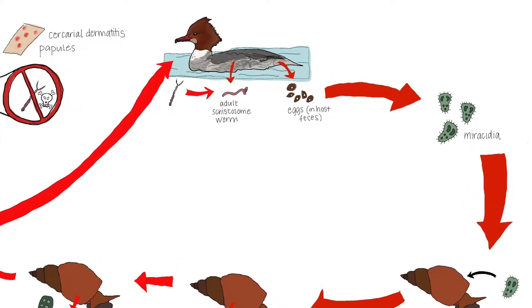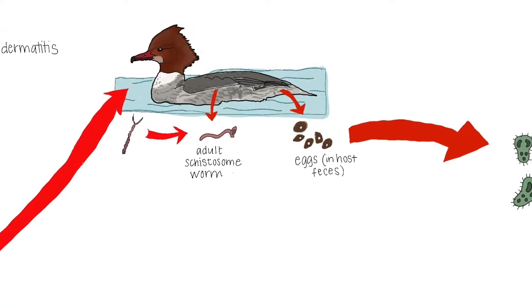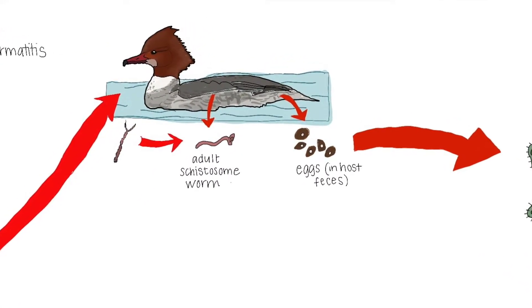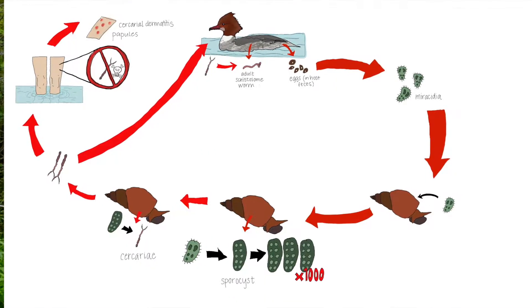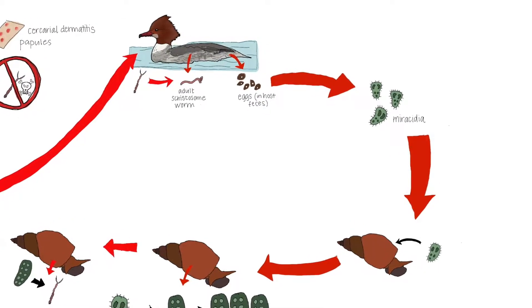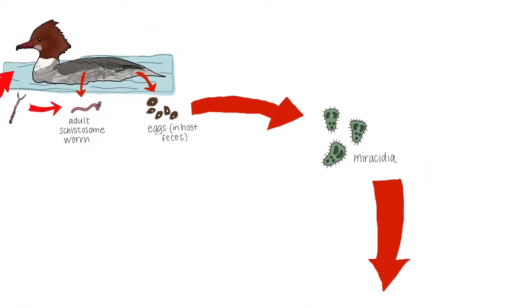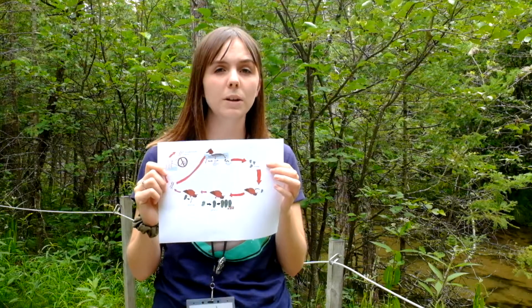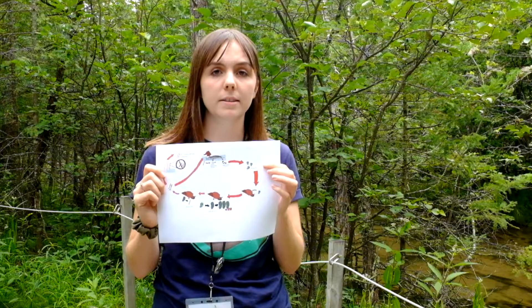Those eggs, once they're in the water column, hatch within the hour. Once the eggs hatch they are now called miracidia larvae. The miracidia do not eat in this time but they are free-swimming, so they can move around wherever they want. They live around 24 to 48 hours, and in that time they must find a new suitable host, otherwise they'll perish.